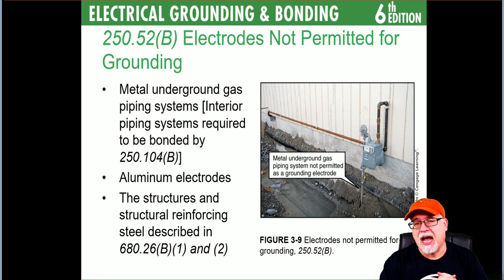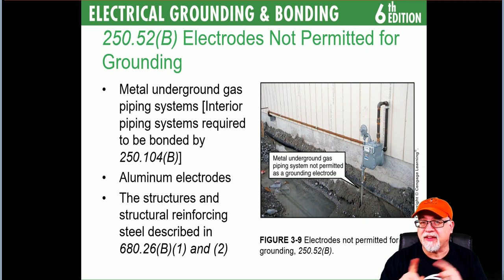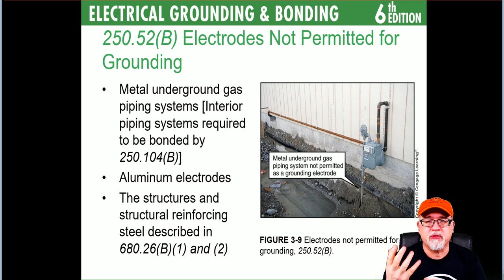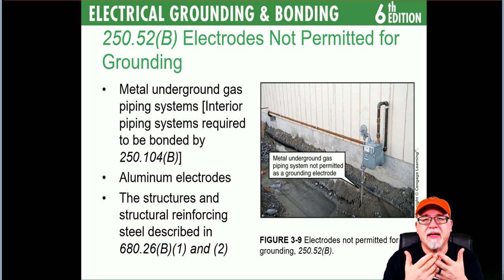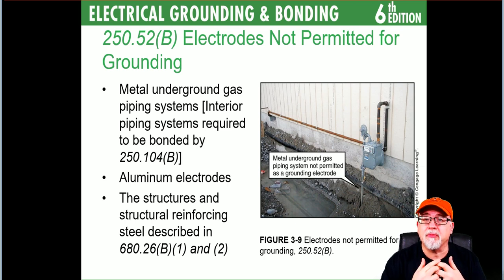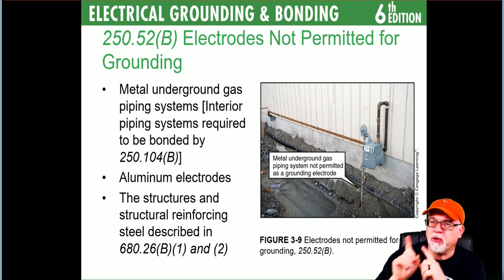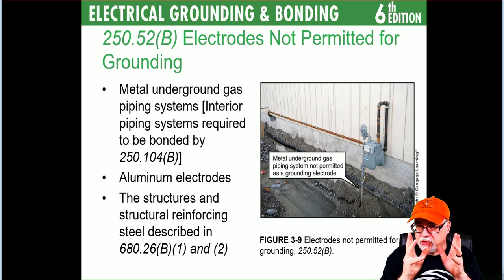There are certain things in the code that you cannot use as electrodes. An underground metal gas piping system is not to be utilized as an electrode. However, the interior piping system may be required to be bonded in accordance with 250.104(B) if it's likely to become energized — for example, where gas and electric both supply the same piece of equipment. Don't confuse bonding inside a building with electrodes — keep them separated.